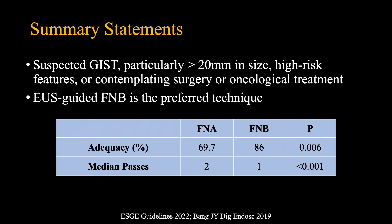In general, lesions suspected to be aggressive must be sampled, particularly if they are larger than 20 millimetres, or if there are high-risk features such as cystic spaces, solid components, mixed calcifications, or the presence of regional adenopathy. We have shown that EUS-guided fine needle biopsy is the technique of choice for sampling subepithelial lesions and is significantly superior to FNA.